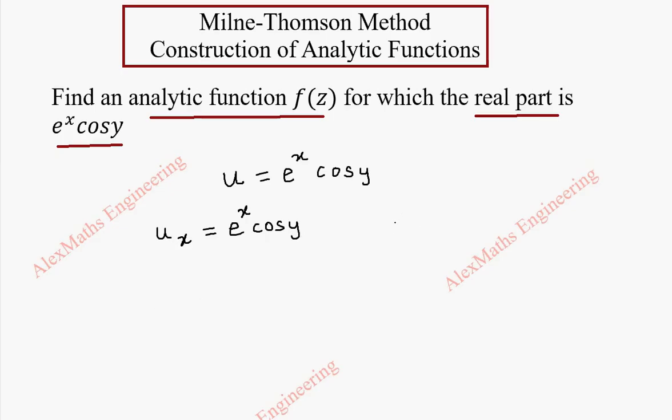Now we should also find u_y. u_y is: now x is treated as a constant, so e^x stays as it is, and the derivative of cos y is minus sin y.